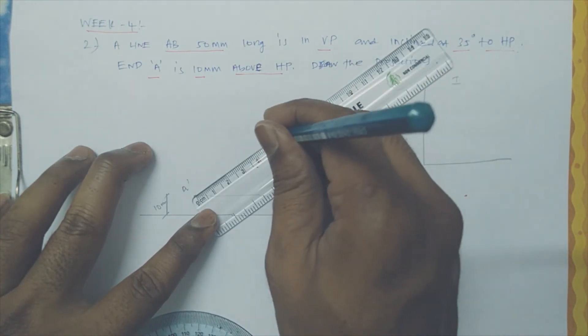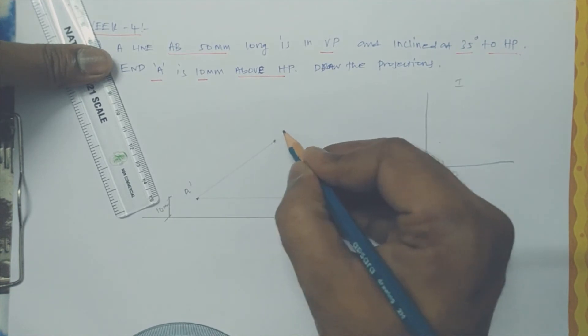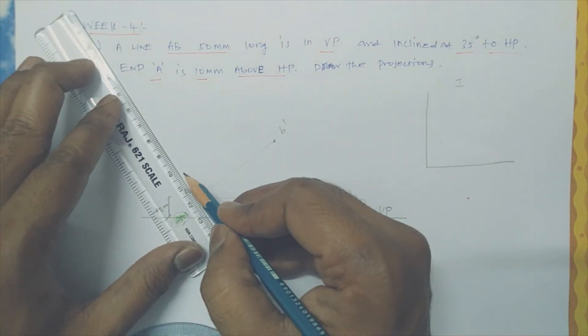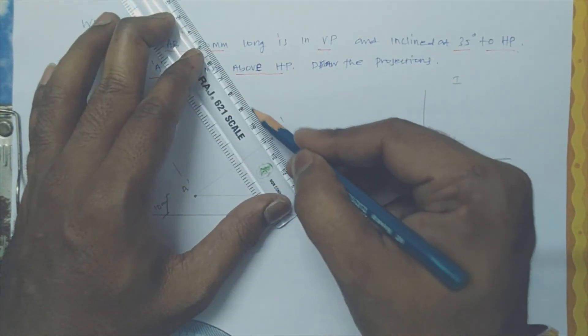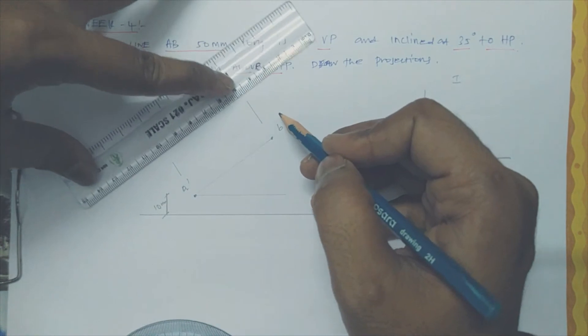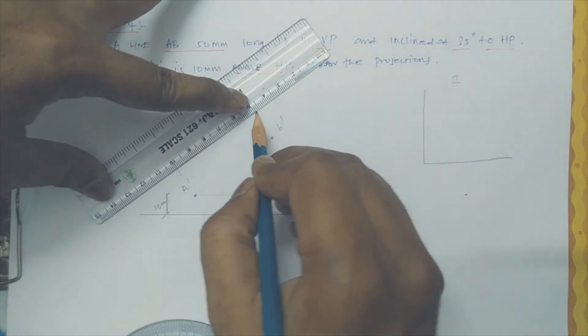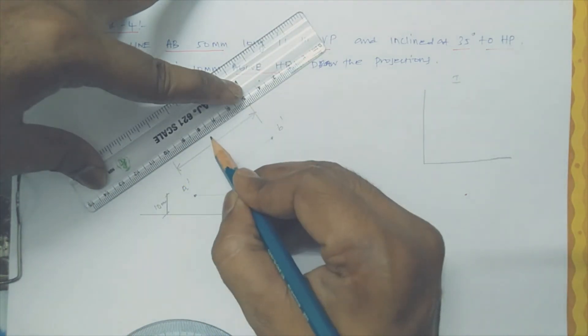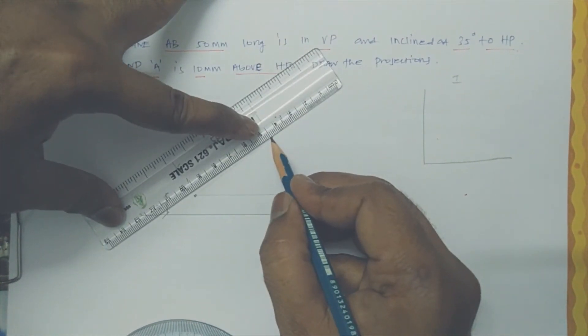Apparently it is 50. So let us mark here, this is B dash. Make one aligned dimension, properly mark the arrows. 50mm, 50mm. So just make harden.